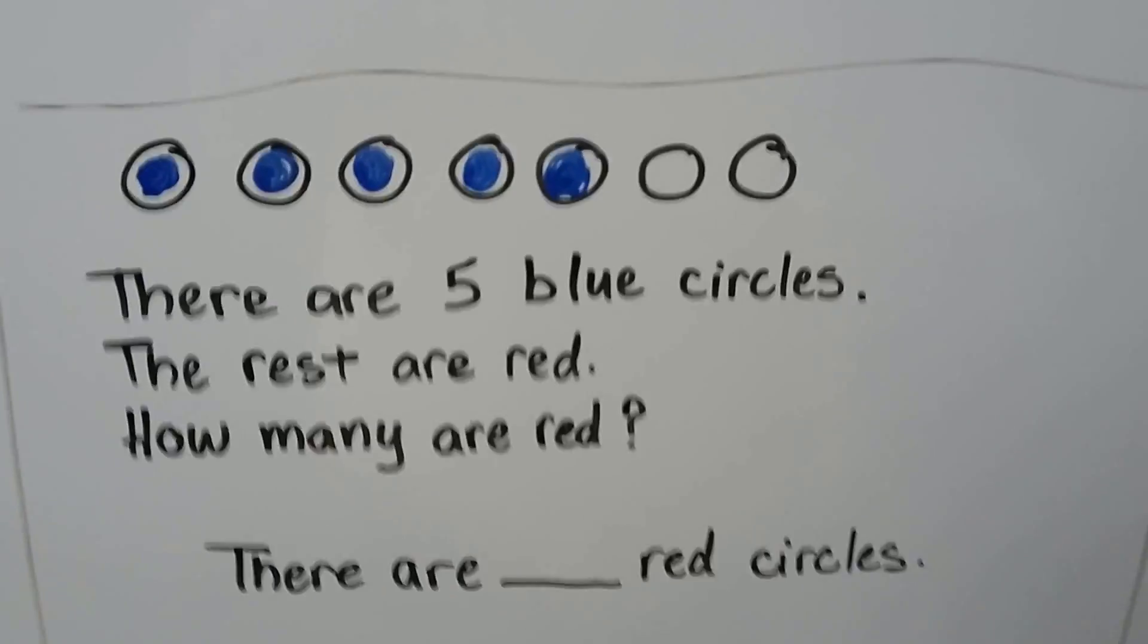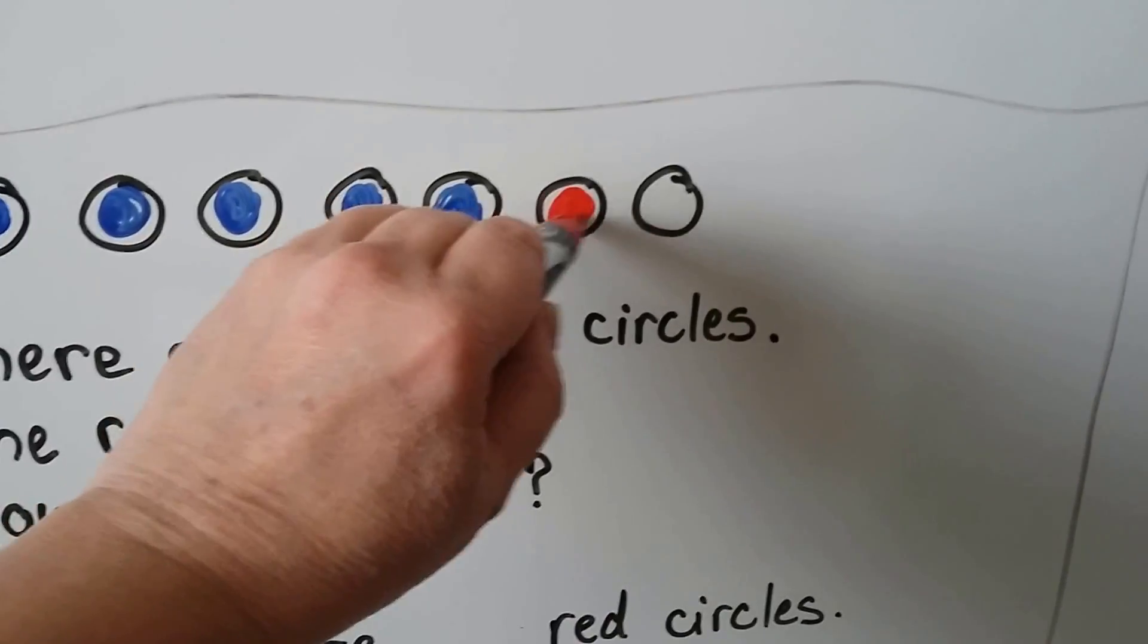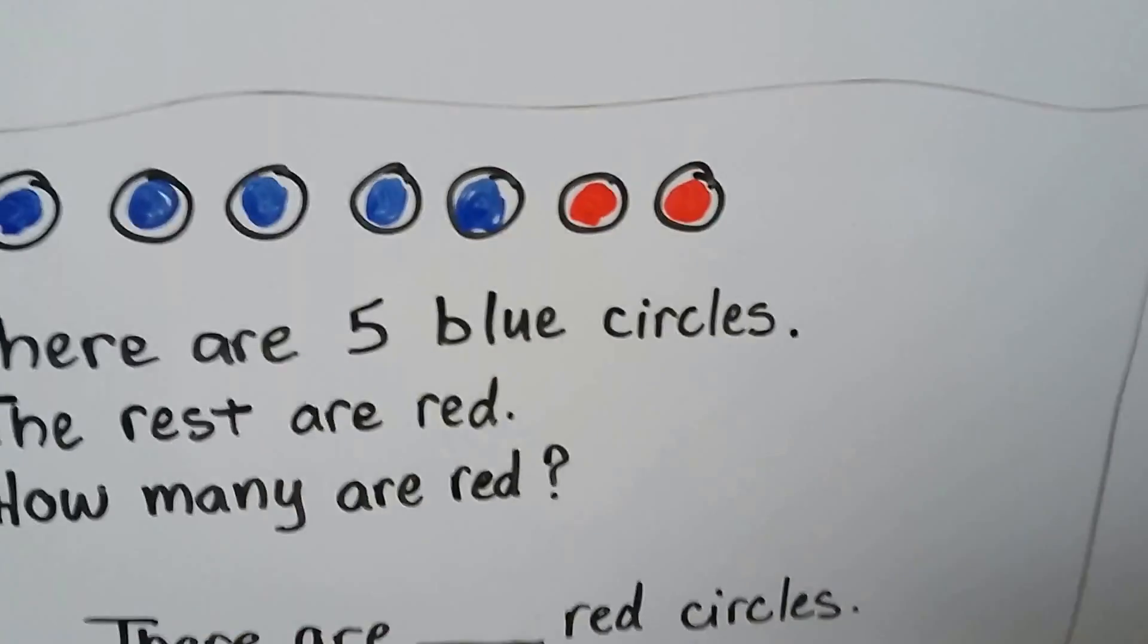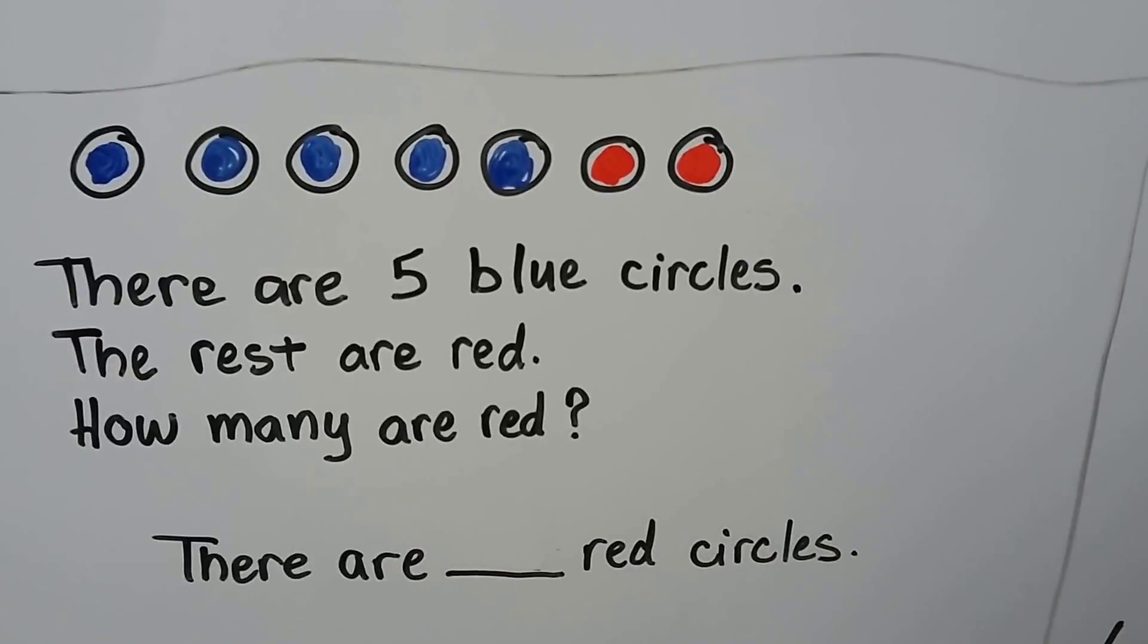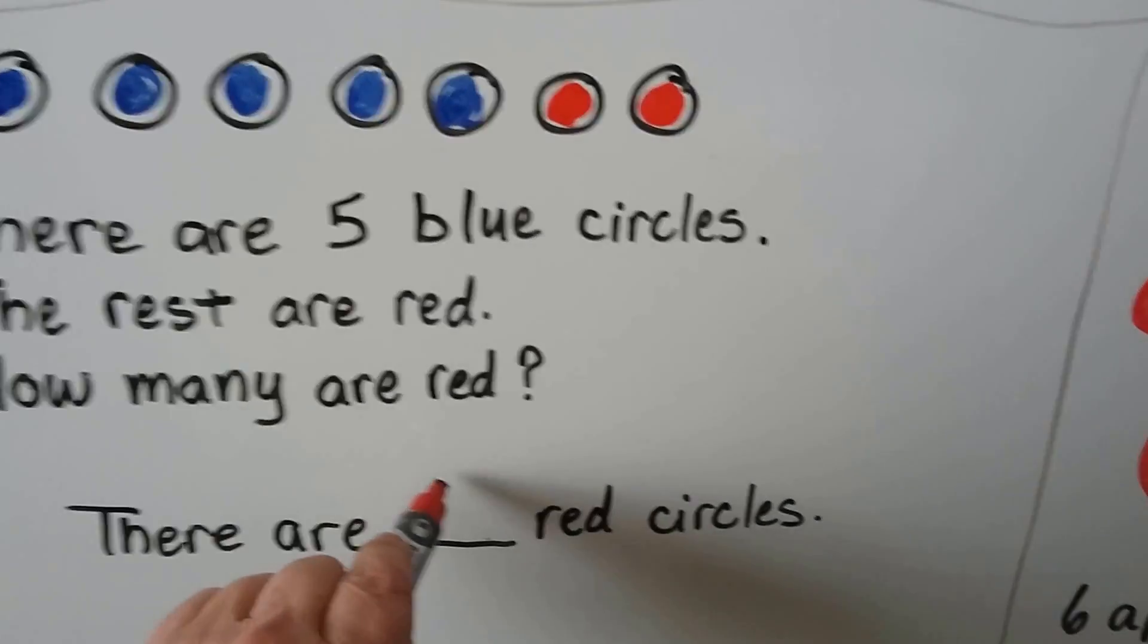And it says the rest are red, and we can color the rest in red. One, two. It's asking us how many are red. One, two. There are two red circles.